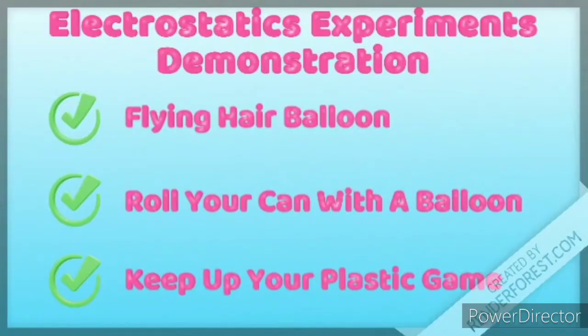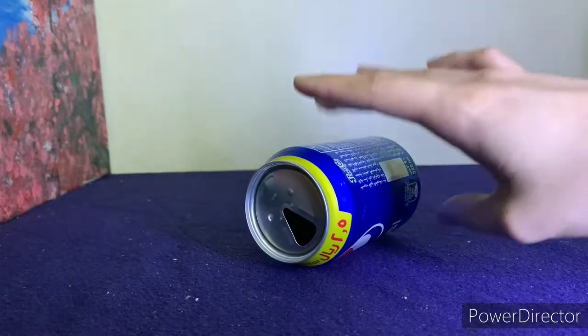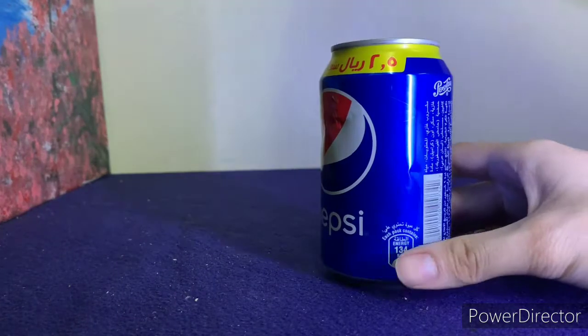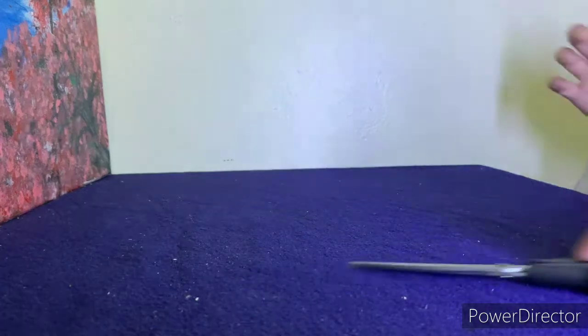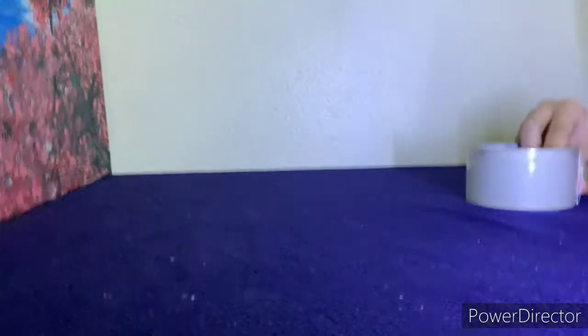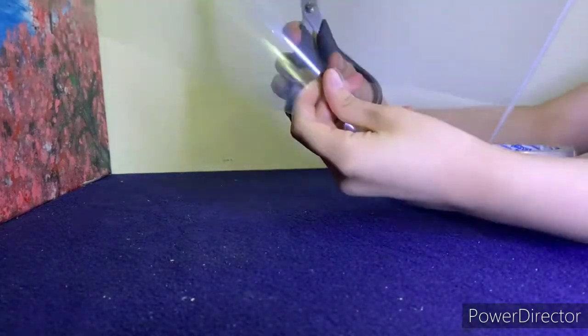Next up on our experiment list, roll your can with our DIY plastic stick. We will need a soda can, scissors, and a plastic, and tape. Start with the plastic and cut it.